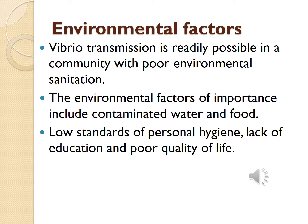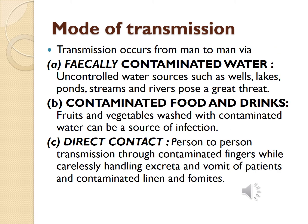Environmental factors play an important role in the spread of cholera. Vibrio transmission is readily possible in a community with poor environmental sanitation. The environmental factors of importance include contaminated water and food supply, low standards of personal hygiene, lack of education, and poor quality of life — all important predisposing factors for the spread of cholera. Transmission of cholera occurs from man to man via three modes: contaminated water, contaminated food and drinks, and direct contact.